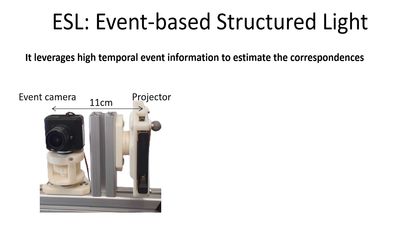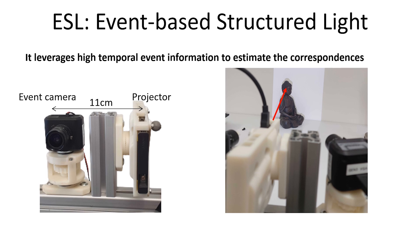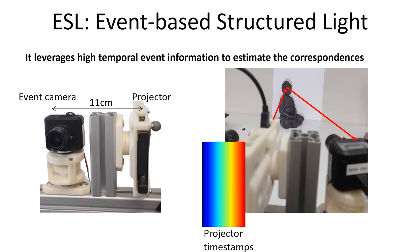ESL works by combining an event camera with a laser point projector. The projector illuminates the scene one point at a time in a raster scanning fashion. This change in illumination triggers an event in the event camera. For one scan interval, the projector traverses each of its pixels at a precise time, which allows us to define a time map over the projector plane.